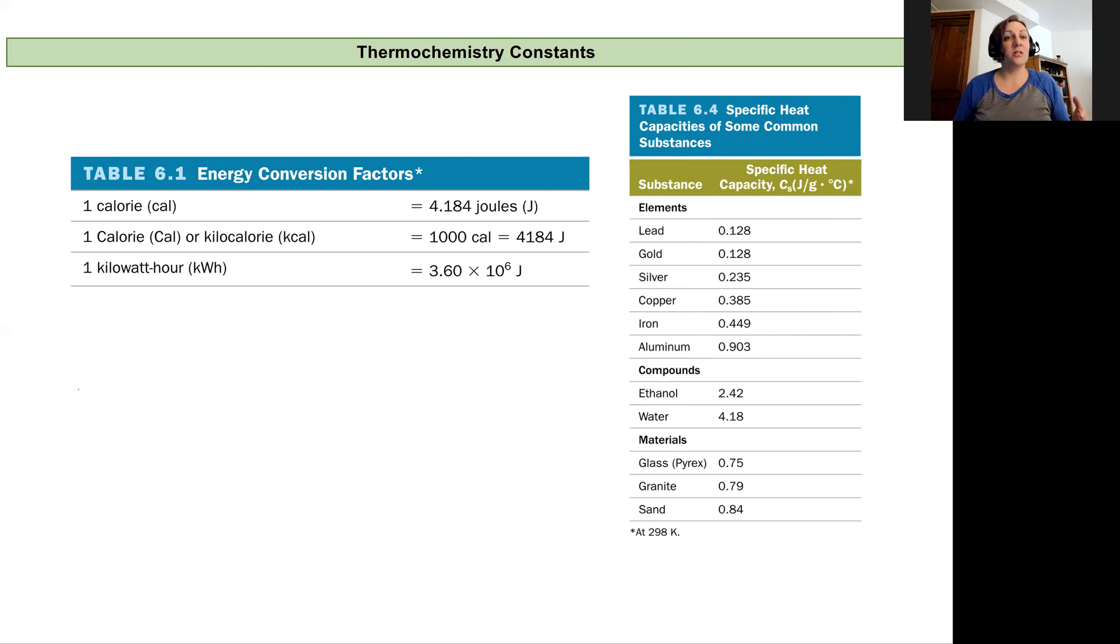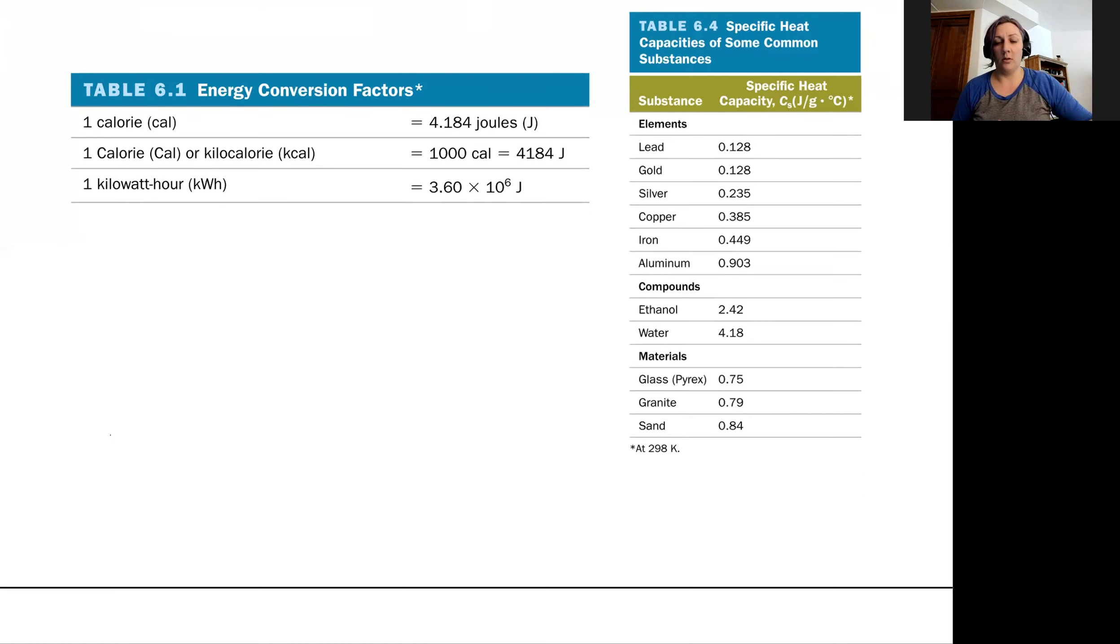We've got energy conversions for calories and kilowatt hours and joules. We also have a specific heat table for some of our common substances. And you can always find more specific heat capacity information by searching online or looking at a chemistry desk reference textbook or text.